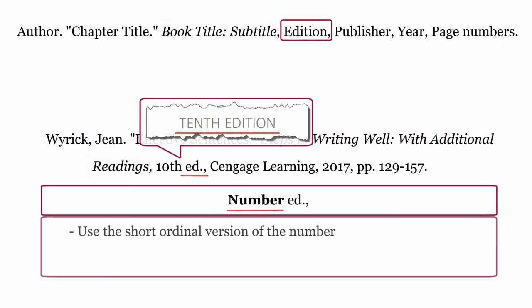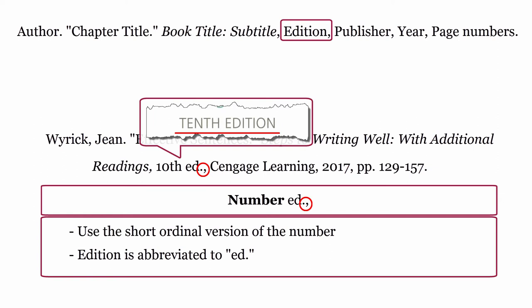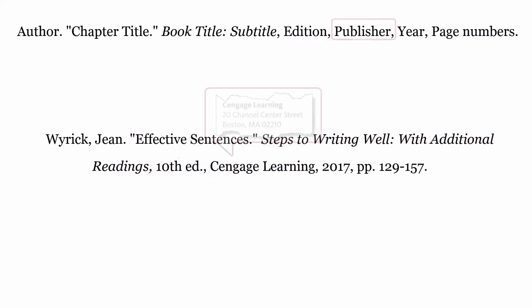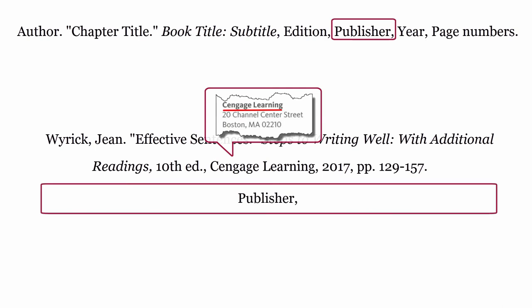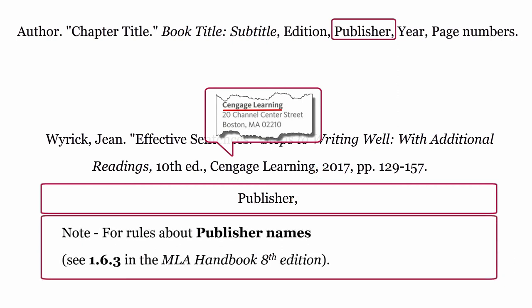Edition. The edition is formatted using the short ordinal version of the number, followed by an abbreviation of the word edition, written as ed, full stop, then a comma to end the section. Publisher. For rules about publisher names, see 1.6.3 in the MLA Handbook, 8th edition.